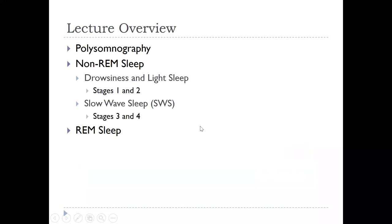REM is its own type of sleep and is not broken into any stages. Whereas non-REM sleep is broken up into four stages. Stages one and two — stage one is a drowsy sleep, getting into sleep, and stage two is light sleep. Then we have stages three and four, which is considered slow wave sleep, because we see these very large, slow delta waves during this period.